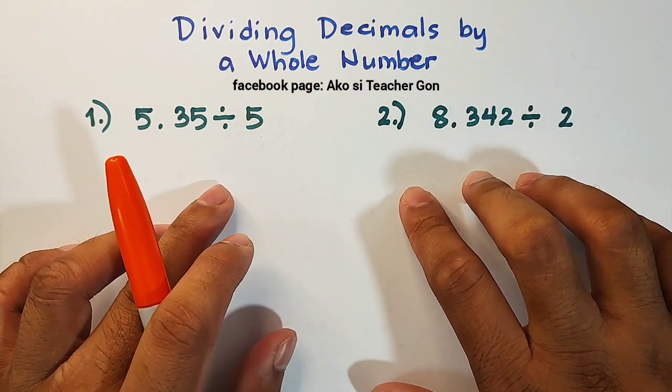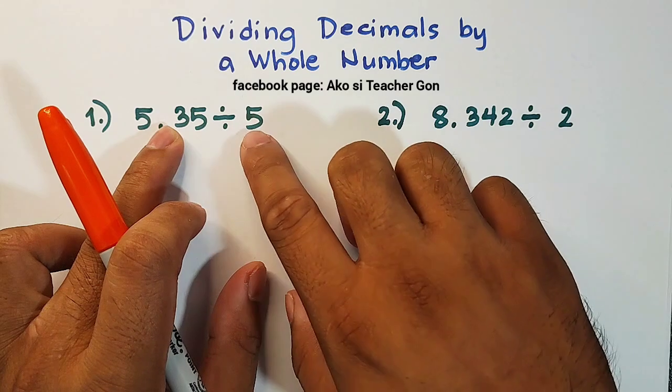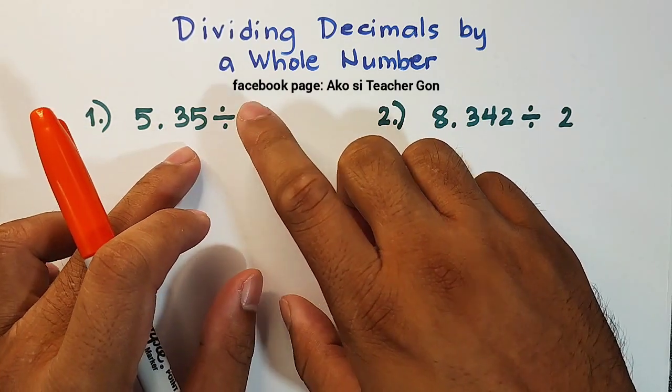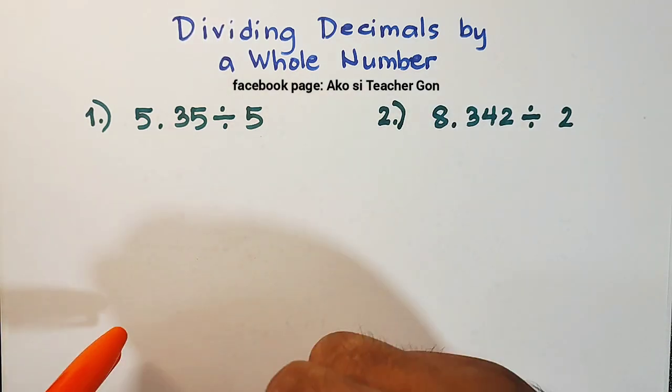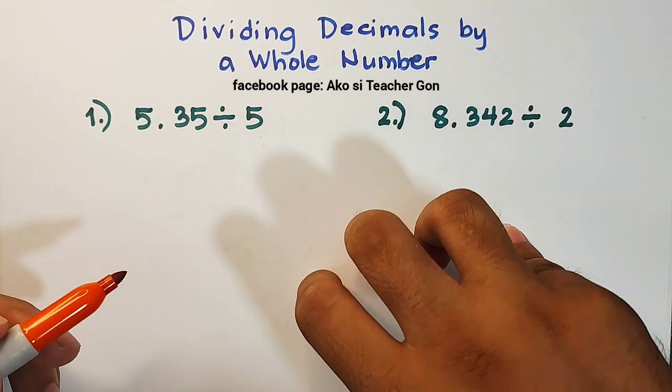We have here two different examples wherein we will divide a decimal by a whole number. This decimal will serve as your dividend while this whole number will serve as your divisor. So let's try and find their quotient. First, we will write this in long division form.